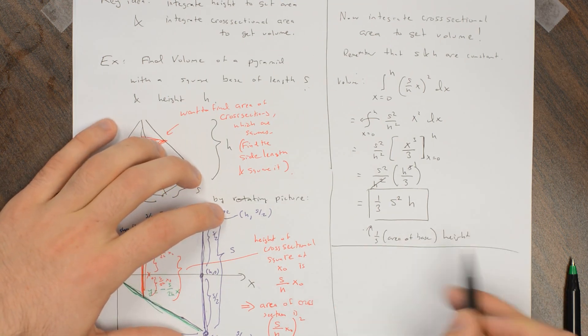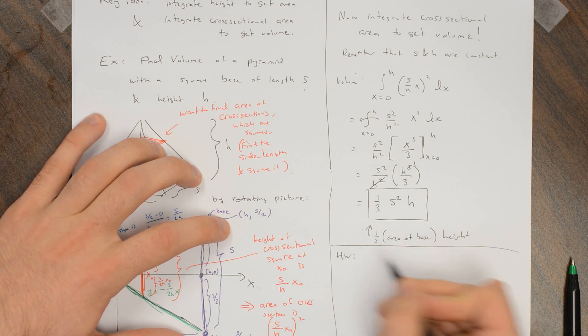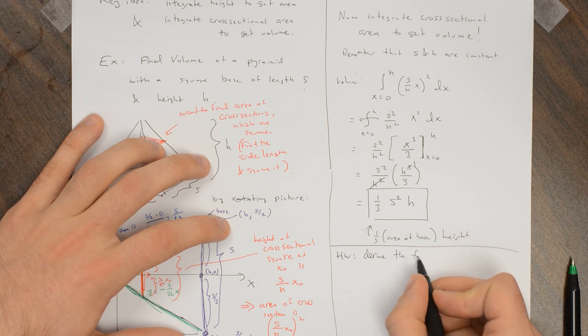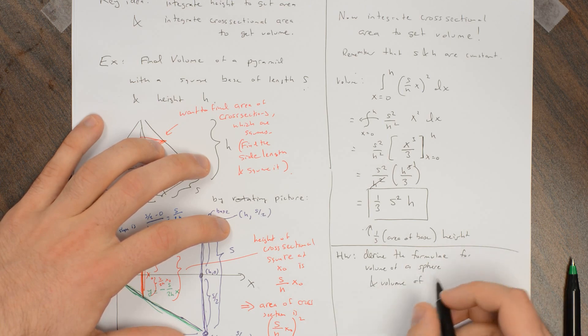So here's some nice exercises. These are actually just solids of revolution, but derive the formulas for volume of a sphere and volume of a circular cone, like an ice cream cone.